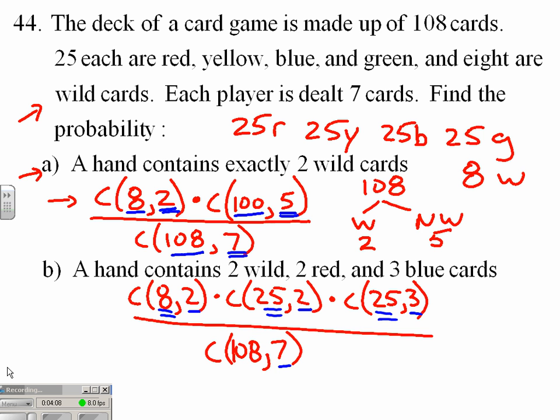It doesn't add up to the 108. But we could suggest that there is a missing combination C(50, 0) here. 50, of course, being our non-red, non-blue, non-wild cards, or our yellow and greens, which we're selecting none of. And now we see that our 8 and 25 and 25 and 50 does, in fact, add up to our 108. That's what I would be referring to when I say classic combinatoric probability structure.